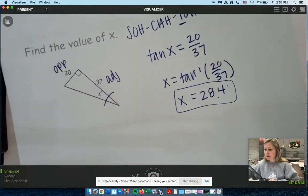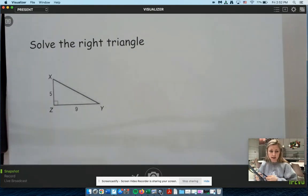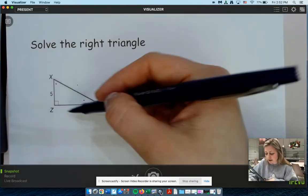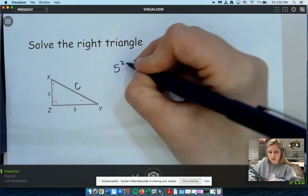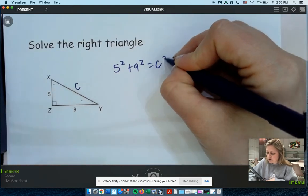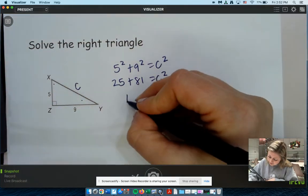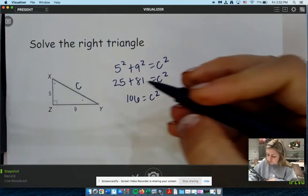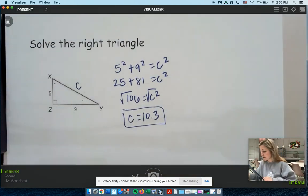And then our last one here says solve the right triangle. So when you solve a right triangle, it just means to find the missing angles and the missing side lengths. So on this one, we're missing this angle, this angle, and that side. Should we start with our side? You could use trig or Pythagorean theorem. I'll just use Pythagorean theorem since we're just missing one side. So let's call it C. So we're going to have 5 squared plus 9 squared equals C squared. 25 plus 81 equals C squared. 25 and 81 is 106. How do you undo something squared? We take the square root. C equals 10.3. So that's done. That's nice.